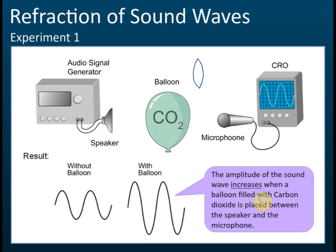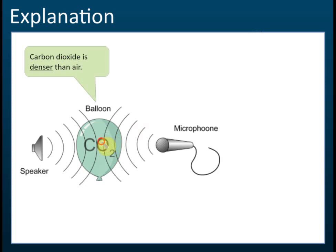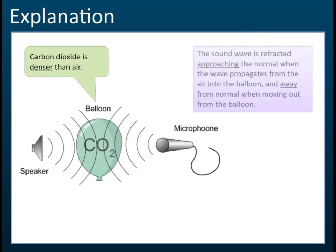This can be explained by the refraction of sound waves. Carbon dioxide is denser than air. When the sound wave moves into the carbon dioxide gas, the speed changes — it actually moves slower in the denser medium. So the sound wave is refracted, bending towards the normal as it enters the balloon.